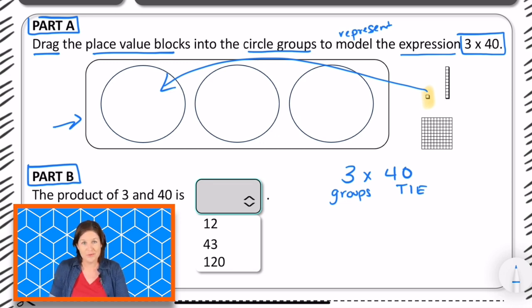What would be a faster way to do that, to place 40 into each group? Yeah, to place 4 of the 10 rods, right?